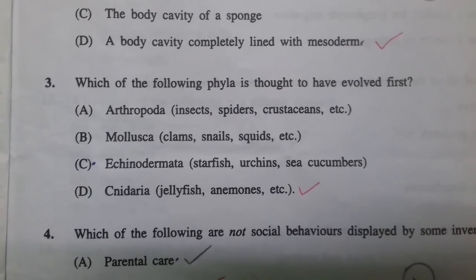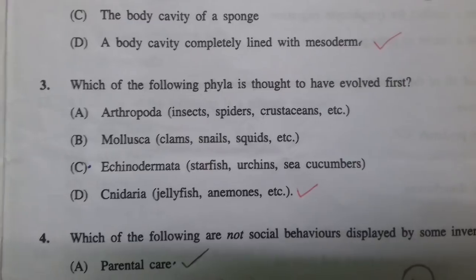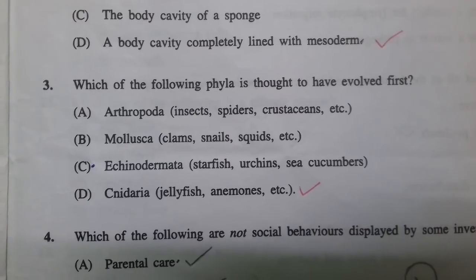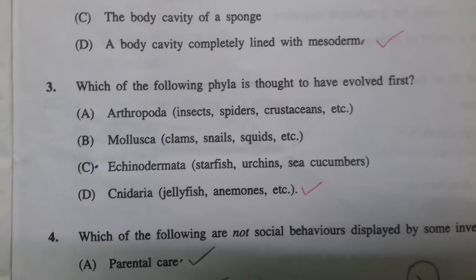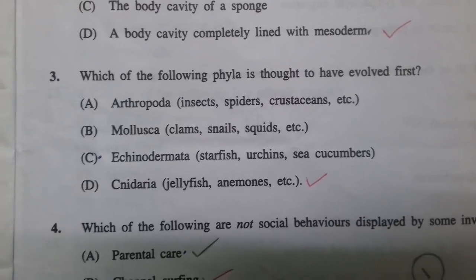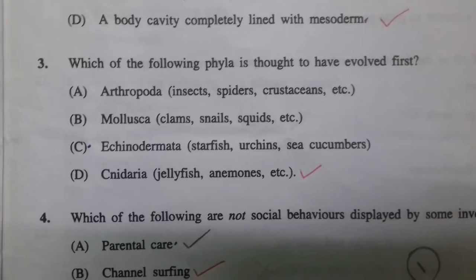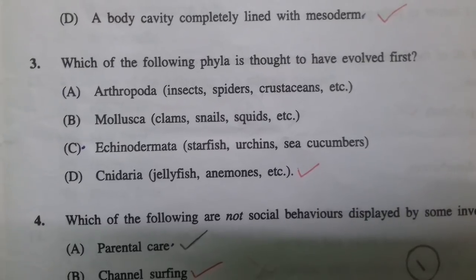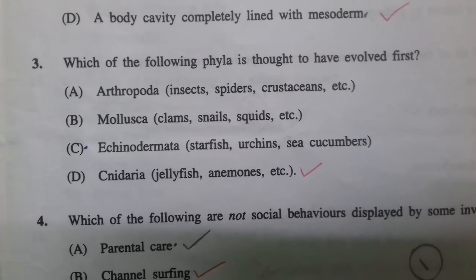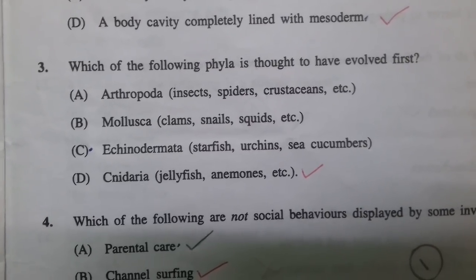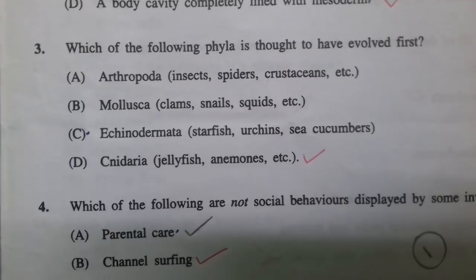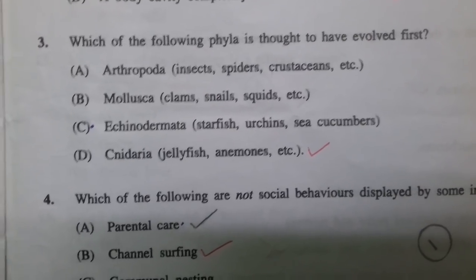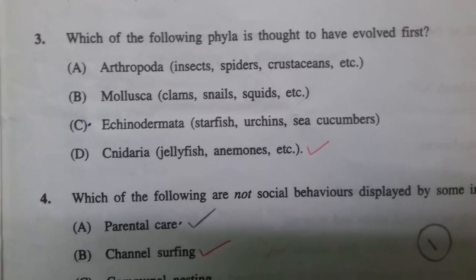The next question asks which phylum is thought to have evolved first. I thought it was Echinodermata, but the correct answer is Cnideria. When reading about zoology, you need to focus on evolution and compare phyla. Cnideria, which includes jellyfish and sea anemones, evolved before Echinodermata.